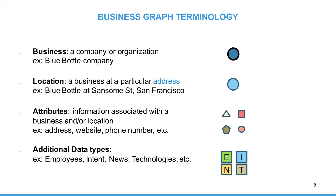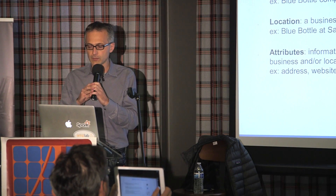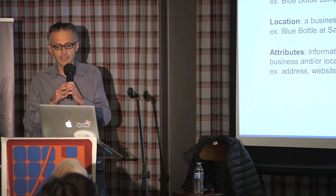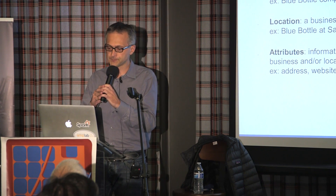I'll introduce a little bit of terminology that I'll use for the remaining presentation. First, we have a concept of a business, which represents a company or organization — such as Blue Bottle in the example — represented as a dark disk with a bold border. We then have a concept of a location, which represents a business at a particular address, such as Blue Bottle at Sunset Street, represented as a light disk with a light border. Attributes represent information bits about a business — phone number, industry category, financial information, and so forth — represented with small geometrical shapes.